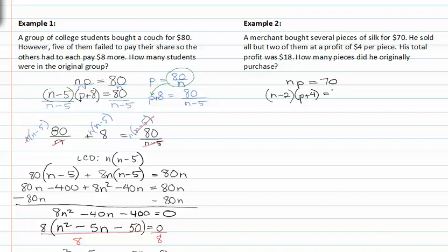His total profit was eighteen dollars, so that means it's above and beyond the seventy dollars that he already paid. So he's going to make overall eighty-eight dollars. How many pieces did he originally purchase? So we want to know the number of pieces. So we're going to again divide by n. So p is equal to seventy divided by n.